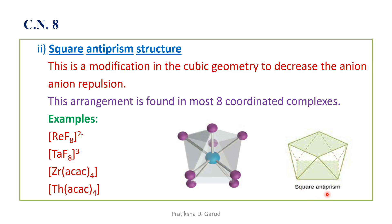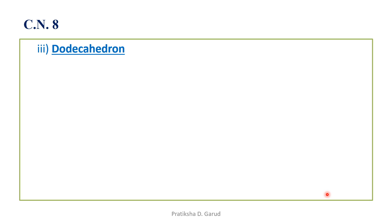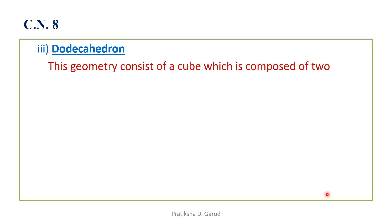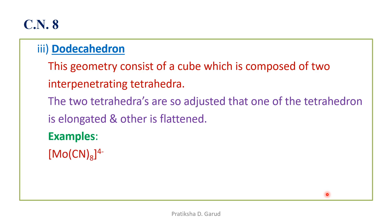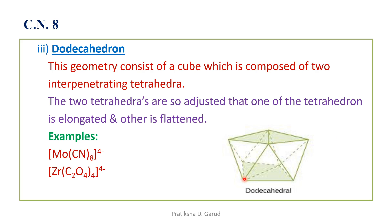The third geometry for coordination number eight is the dodecahedron. This geometry consists of a cube composed of two interpenetrating tetrahedra — one elongated and one flattened. Examples are [Mo(CN)8]⁴⁻ and [Zr(C2O4)4]⁴⁻. The dodecahedron geometry consists of two interpenetrating tetrahedra, one elongated and one flattened.